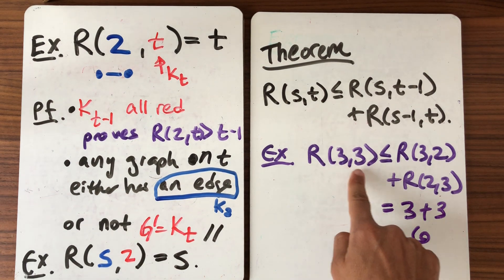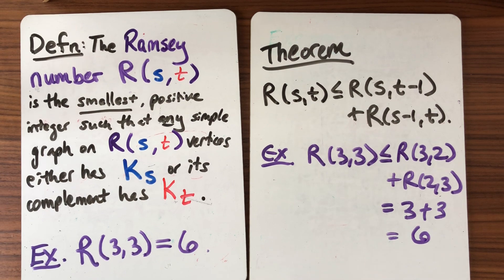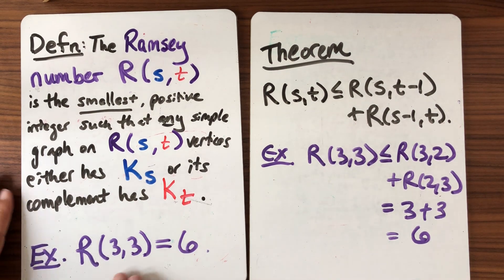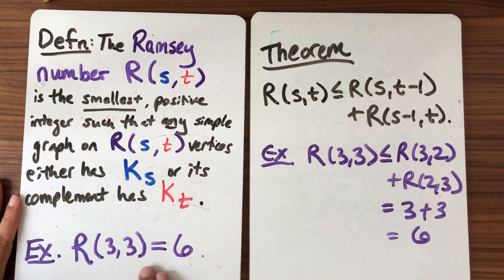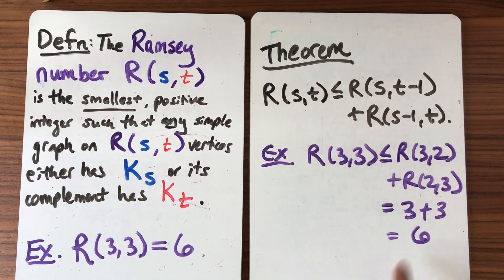So we know that the Ramsey number (3,3) is at most 6. Since we computed last time directly that we knew that this wasn't equal to 5 because we drew the pentagon or the K_5 with a pentagon and all the interior edges that had no triangle in it that was monochromatic. So that proves also with this bound that the Ramsey number is actually equal to 6.